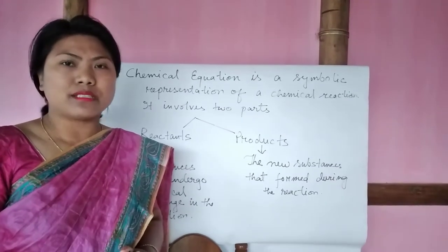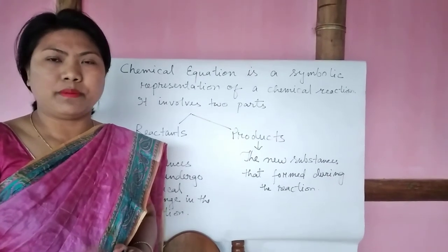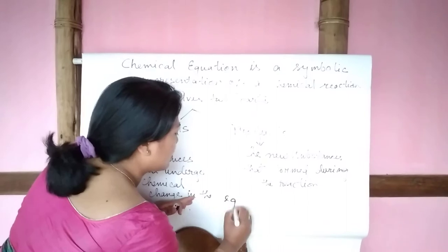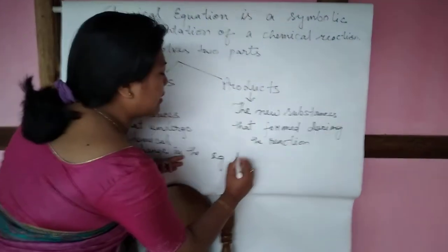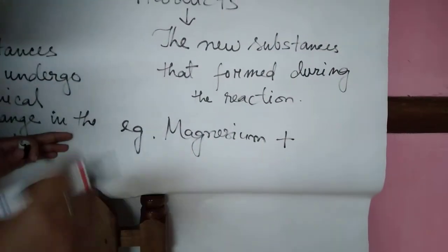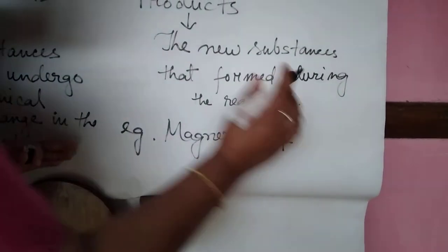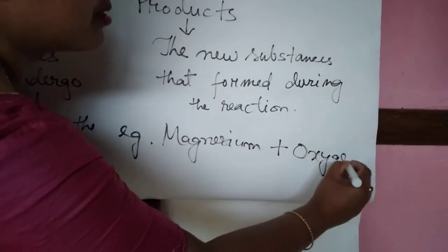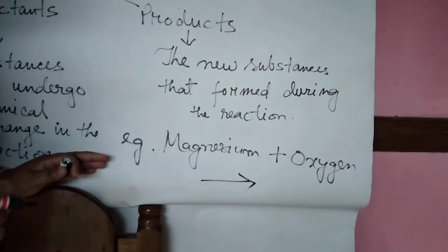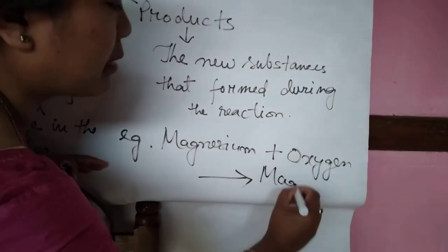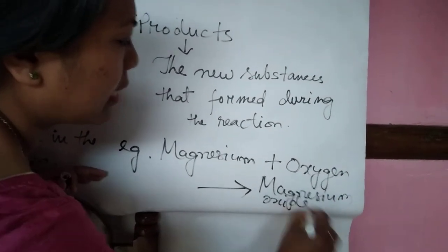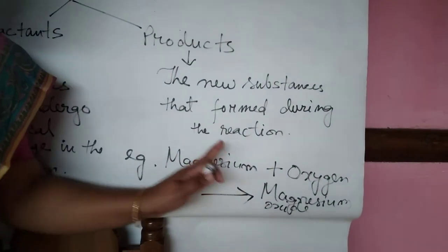The reactants are your magnesium ribbon and the oxygen present in air that reacts with the magnesium ribbon when it burns. So let me tell you the example. First you can write magnesium, then plus, we will use this plus symbol, and then your second reactant, that is oxygen. Then by using an arrow, you will write your product, and what is your product? Magnesium oxide. So this is a word equation.